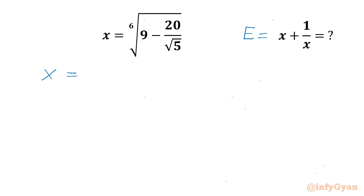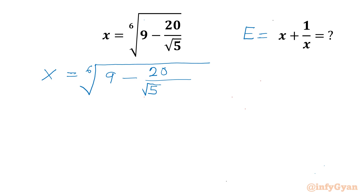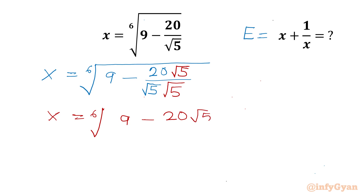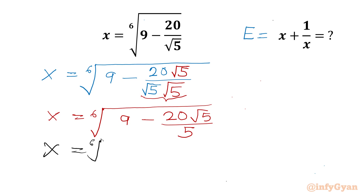I will write our x as the 6th root of 9 minus 20 divided by square root 5. Now I will rationalize 20 over square root 5, so I need to multiply numerator and denominator by square root 5. Root 5 times root 5 is 5, and 20 over 5 is 4. So we can write x is equal to the 6th root of 9 minus 4 square root 5.